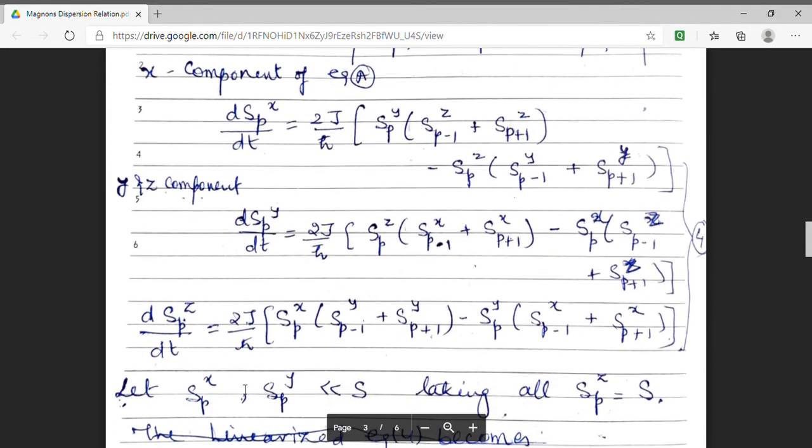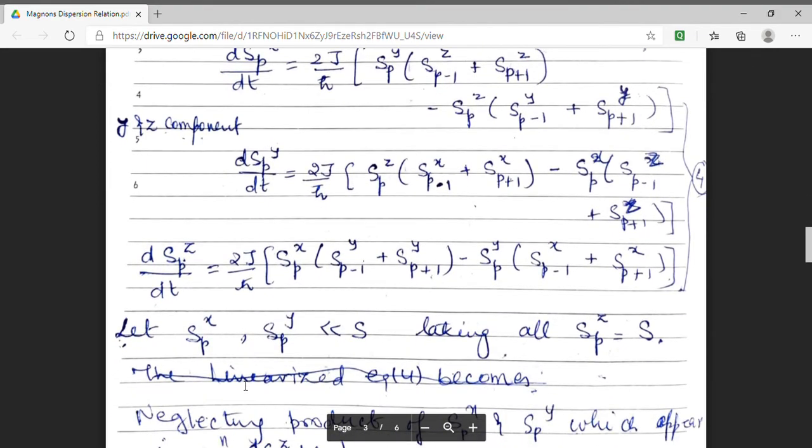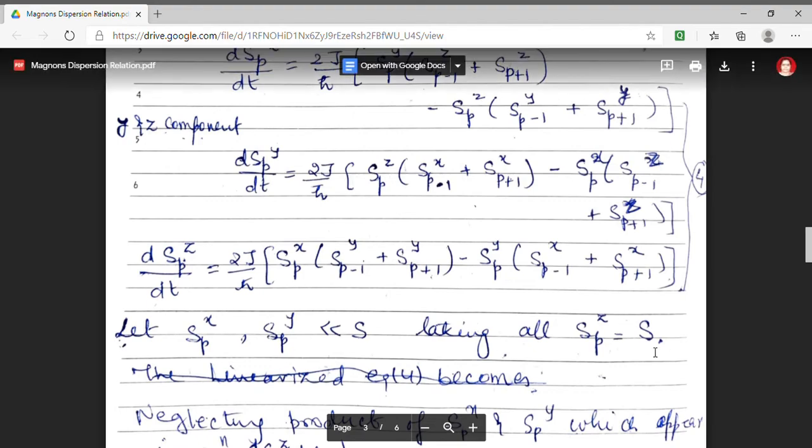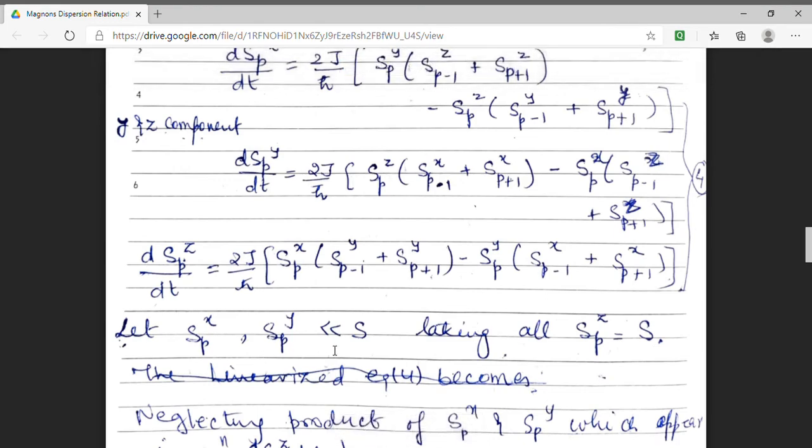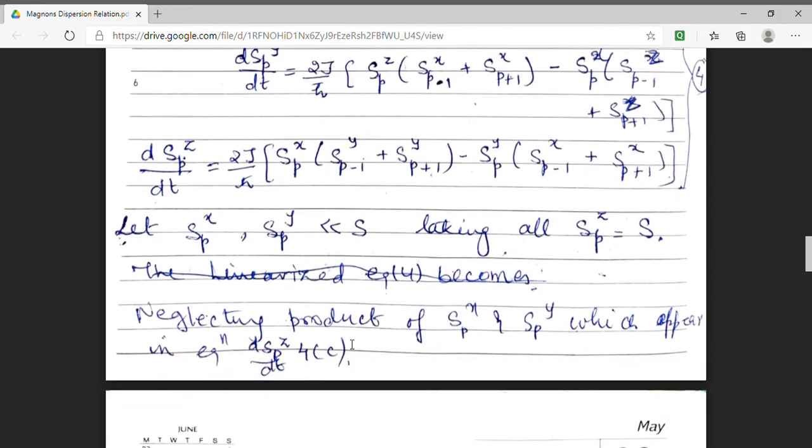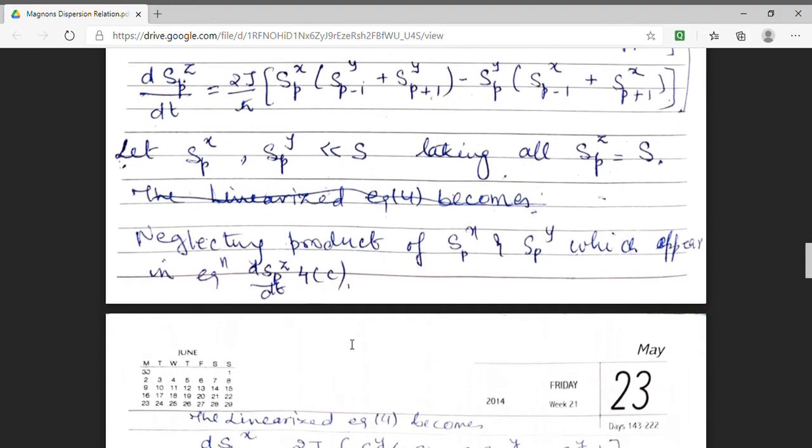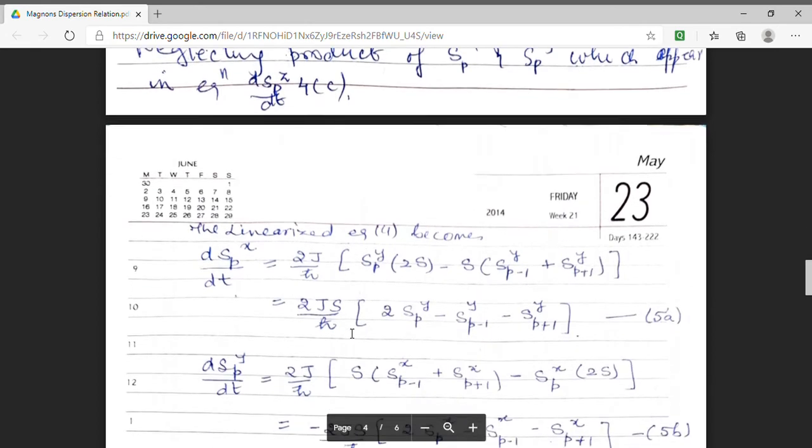Now, in order to solve this expression, I am assuming that my spin is along z direction. That means, I am taking spz to be equal to s. So, spx and spy, they will be very much small than total spin s. Hence, we can neglect their product. So, my linear expressions on substituting, they comes out to be,